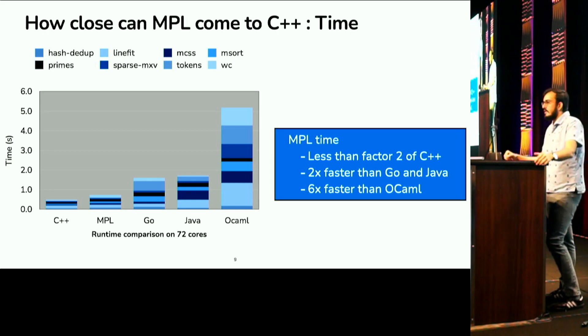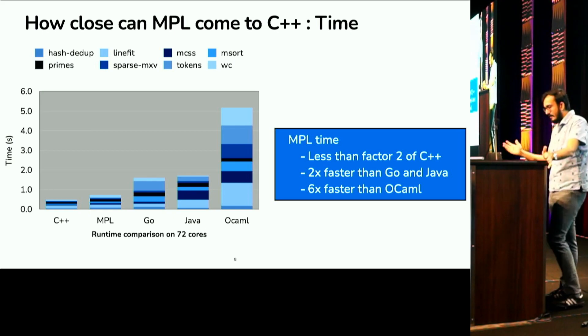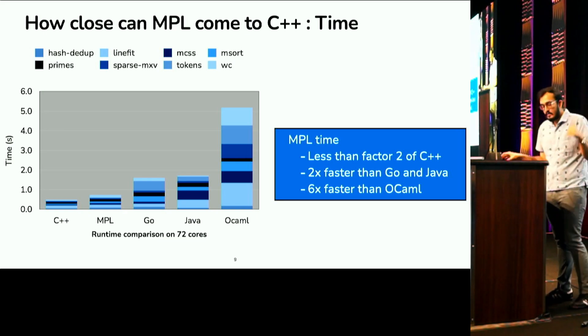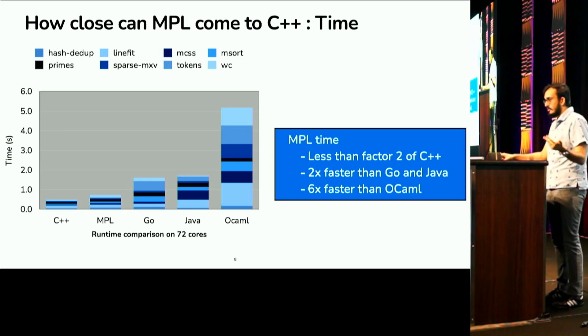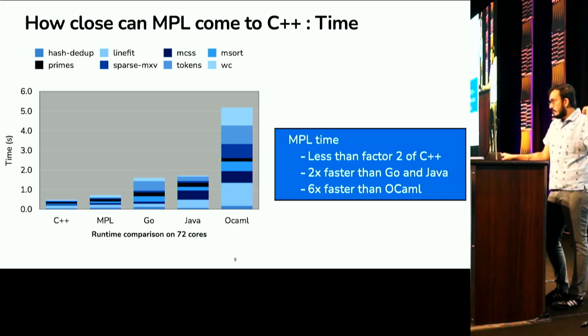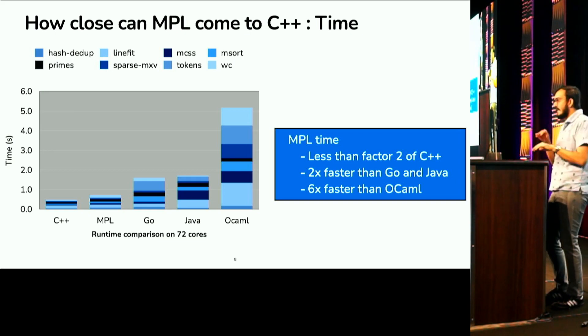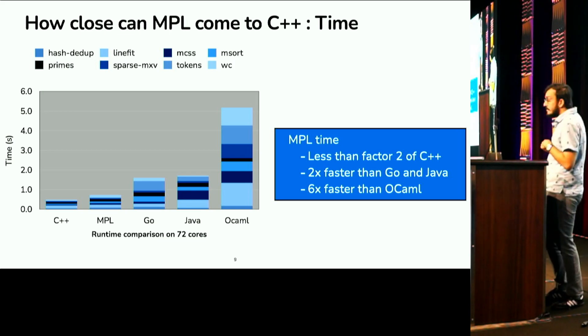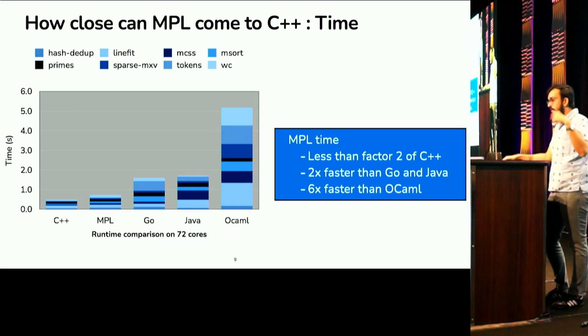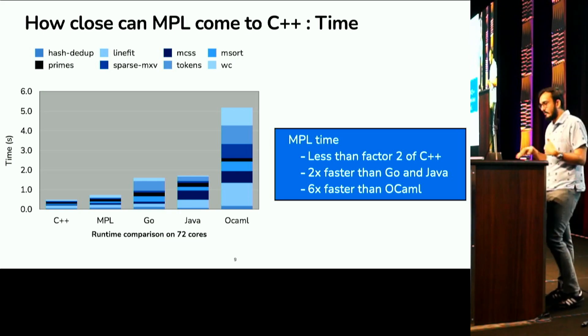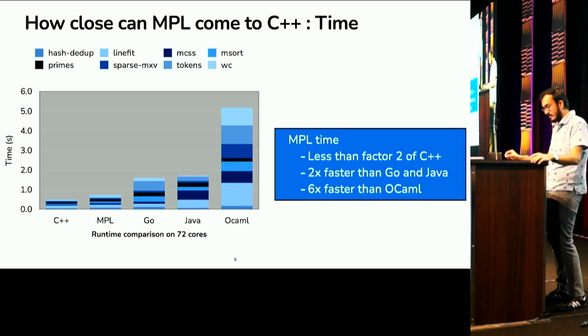So, what we did to get a full scale picture is we implemented eight benchmarks in five languages. Like C++, Maple, Go, Java and OCaml. And I'm showing you the results of that comparison by stacking the times of all the benchmarks. So, basically in this plot, the y-axis represents the time to run all the benchmarks and the x-axis represent the languages. And this run time, it's taken on 72 cores.